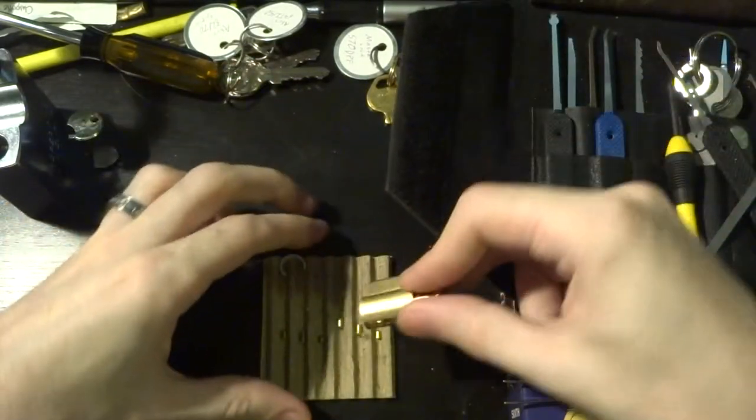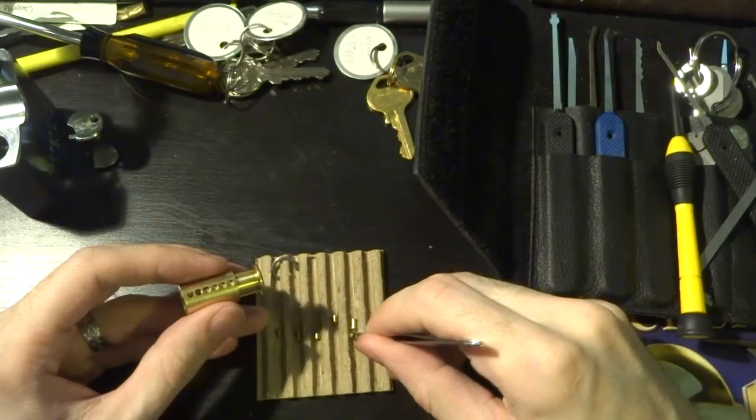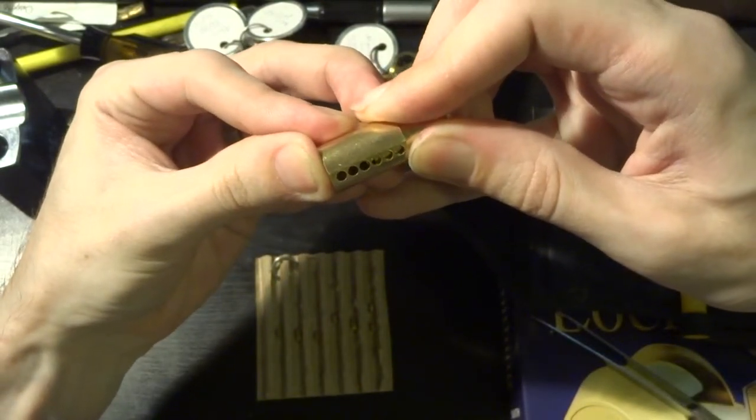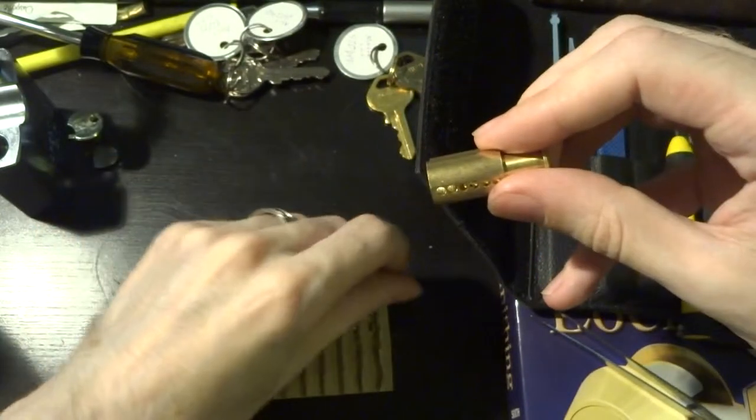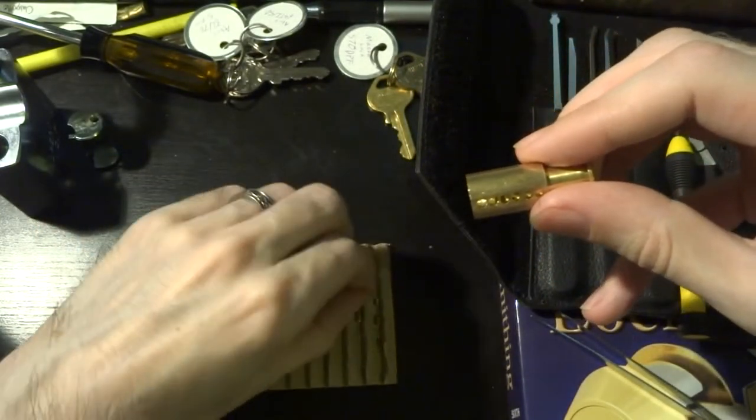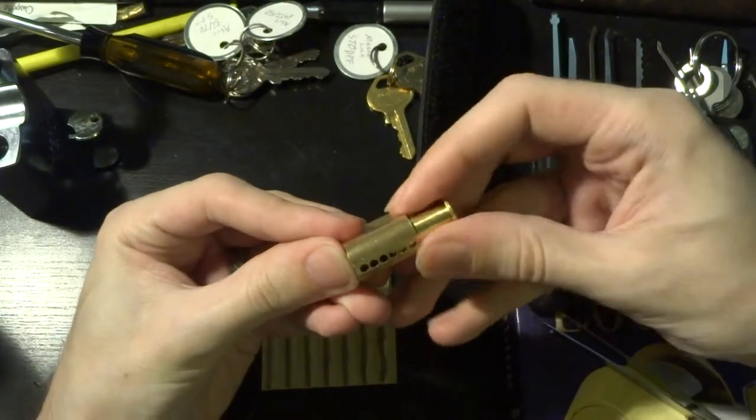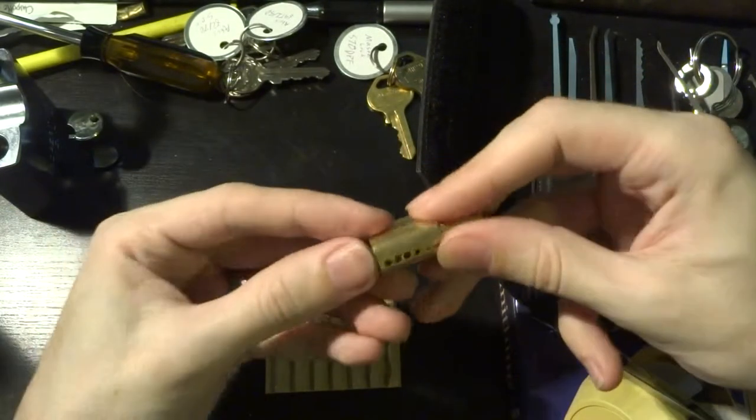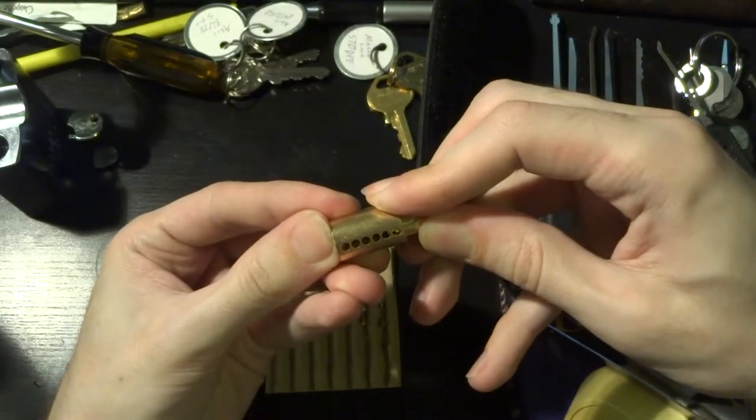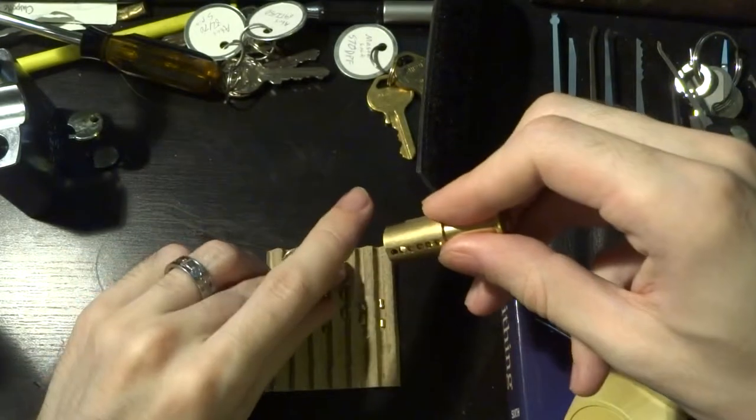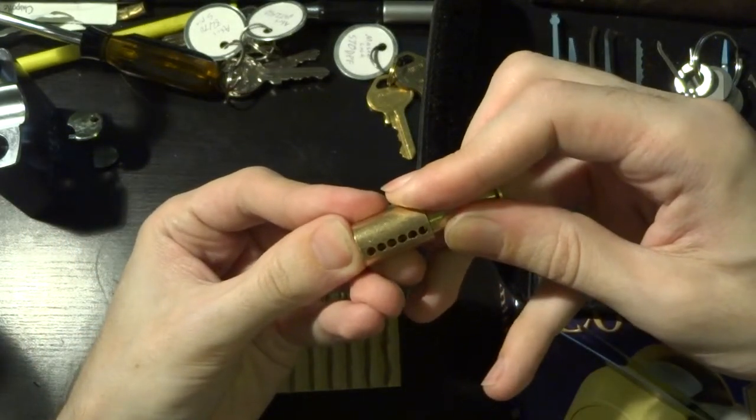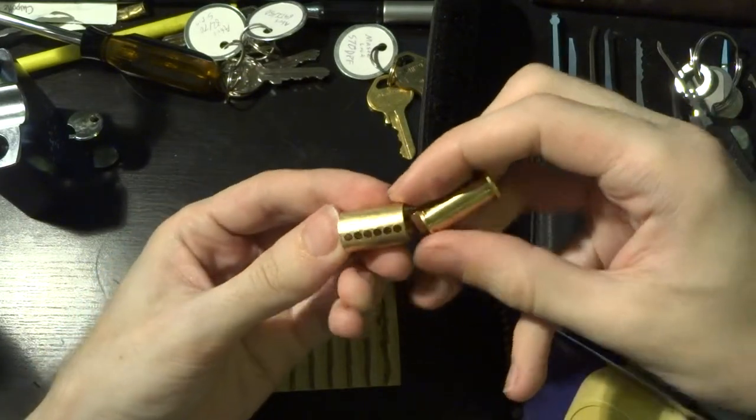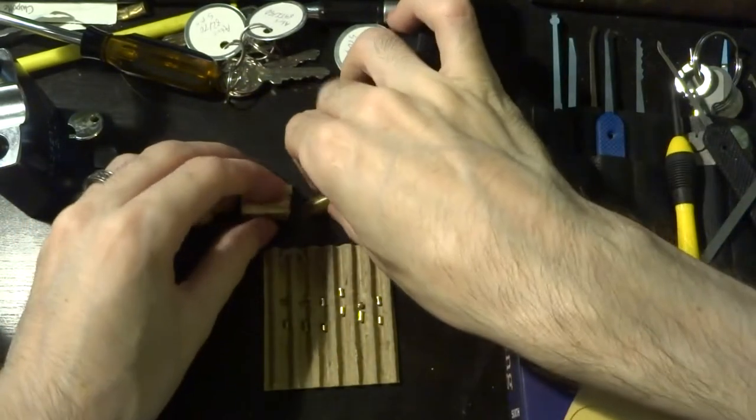There is a driver pin from chamber 6, and it's a spool. There's a driver pin from chamber 5, that's also a spool. There's a spool from chamber 4. Spool from chamber 3. Spool from chamber 2. And finally, from chamber 1, the one standard pin. So there you have it. That is your pinning.